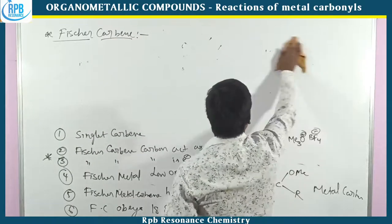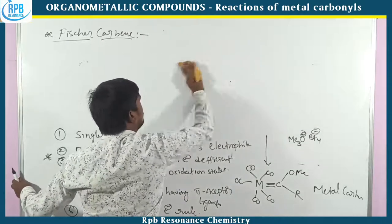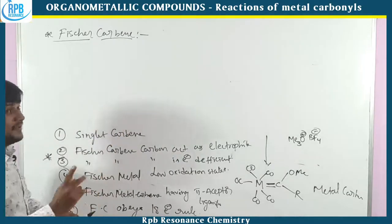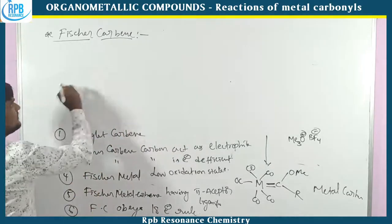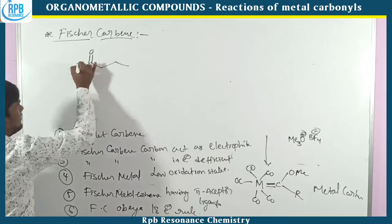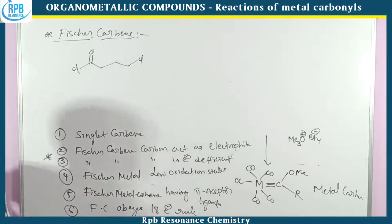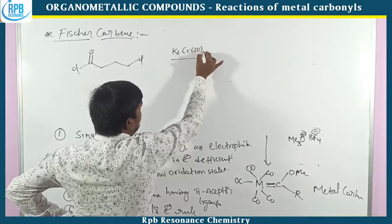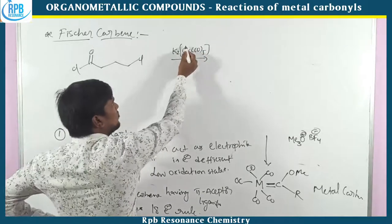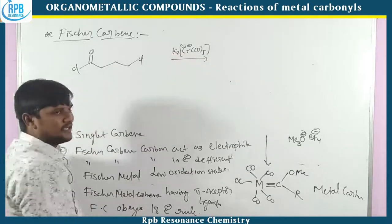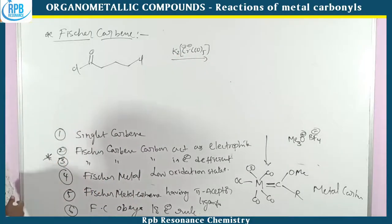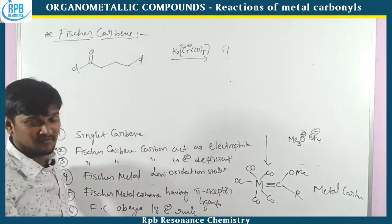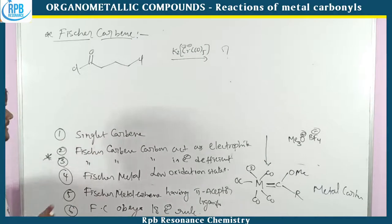Now let's move on to another example in Fischer carbene synthesis. Here it is an acyl chloride with an alkyl chloride, treated with a chromium pentacarbonyl system — K2[Cr(CO)5]. The chromium has two negative charges neutralized by two potassium positive charges. Now what is the major product — whether it forms Fischer carbene or not?